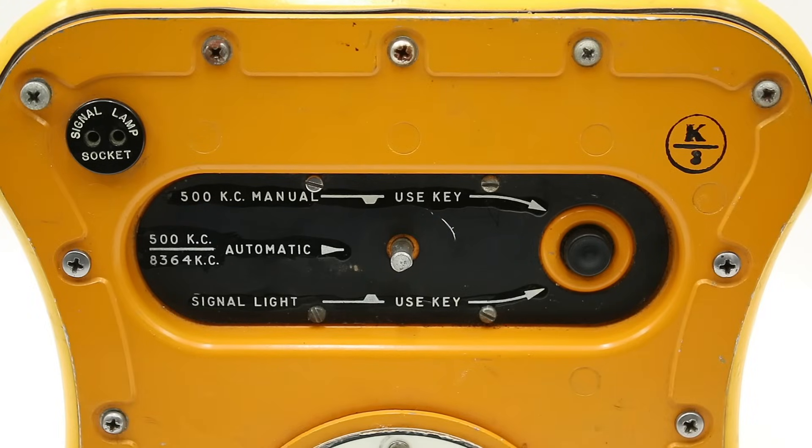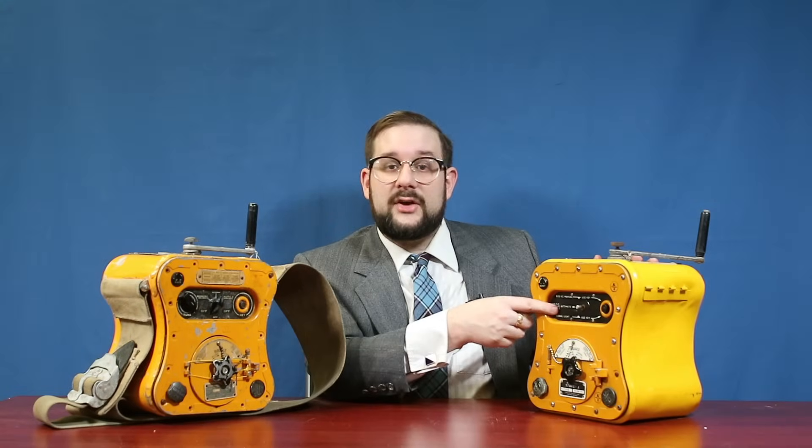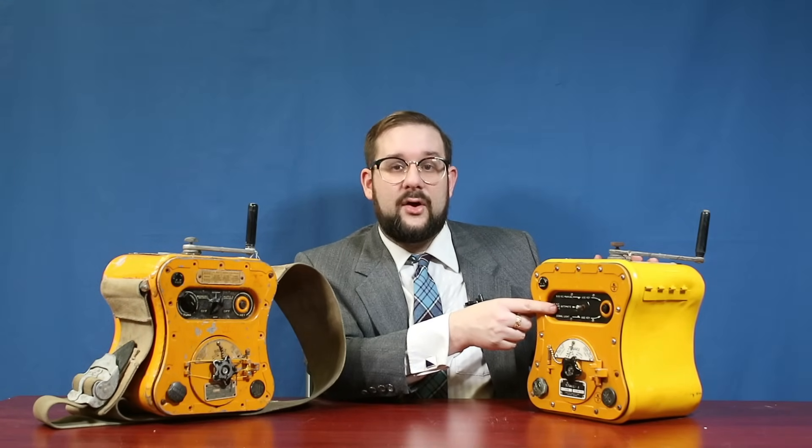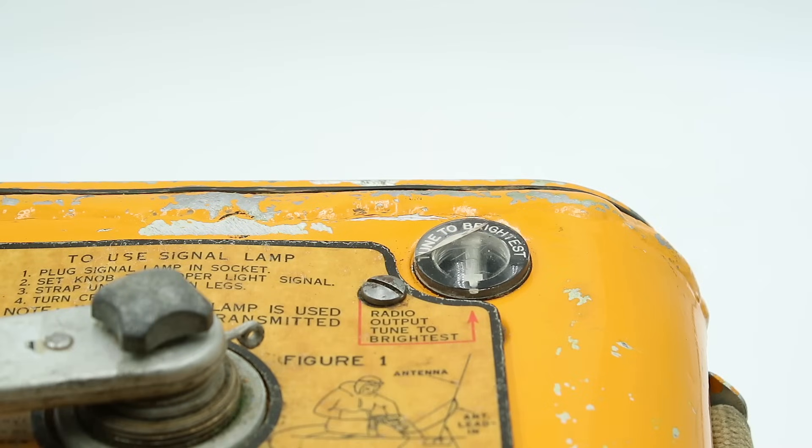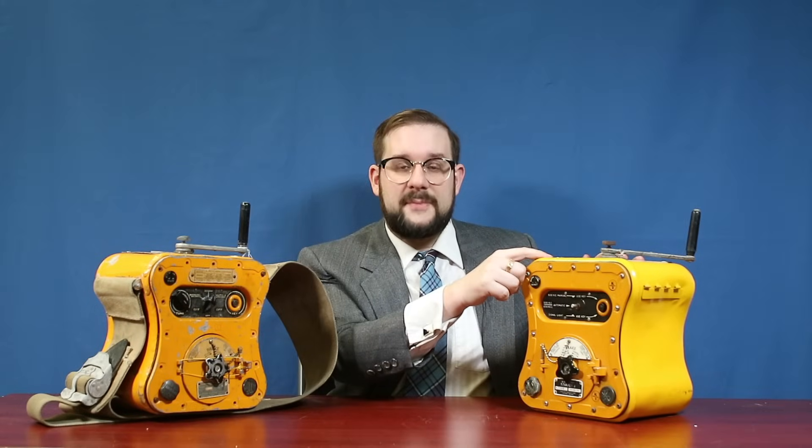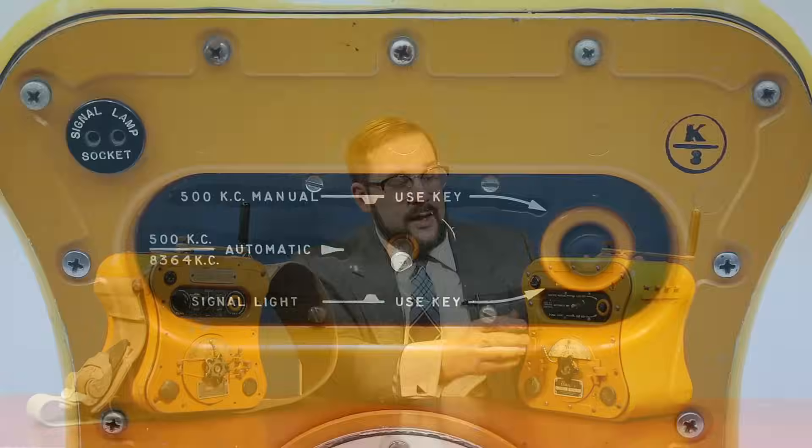And so transmitting at both frequencies allowed the AN CRT3 to achieve maximum coverage in the same compact package. Now the AN CRT3 also eliminated the tuning knob and this was made possible by issuing the strict requirement that the entire 300 foot antenna be deployed at all times. Indeed, so important was this requirement that two extra spools of wire were issued with the AN CRT3 in case the original was lost or damaged. And this lamp no longer indicates the degree of tuning but rather flashes along with the transmission to indicate that the transmitter is properly driving the antenna.